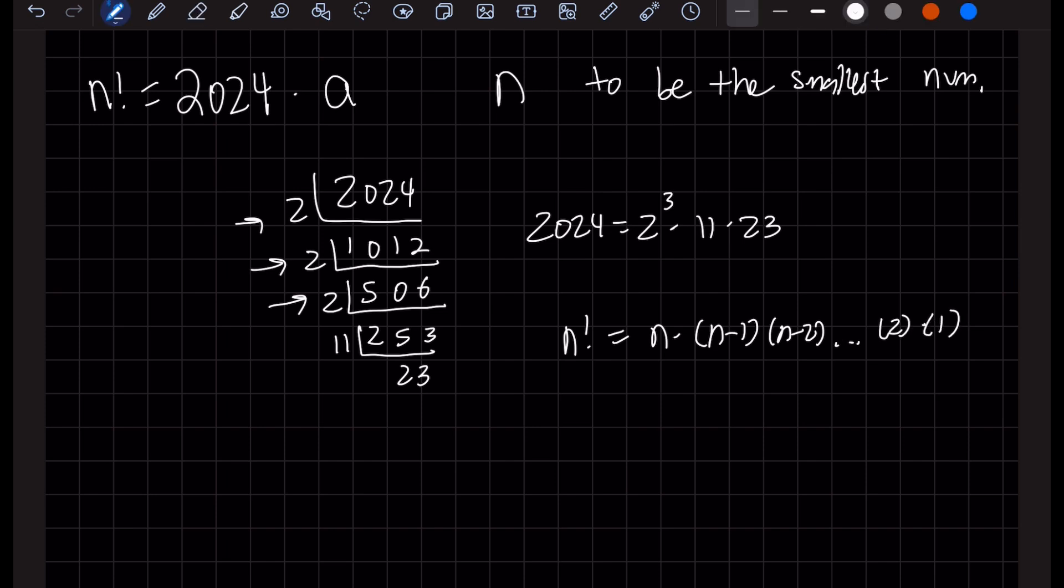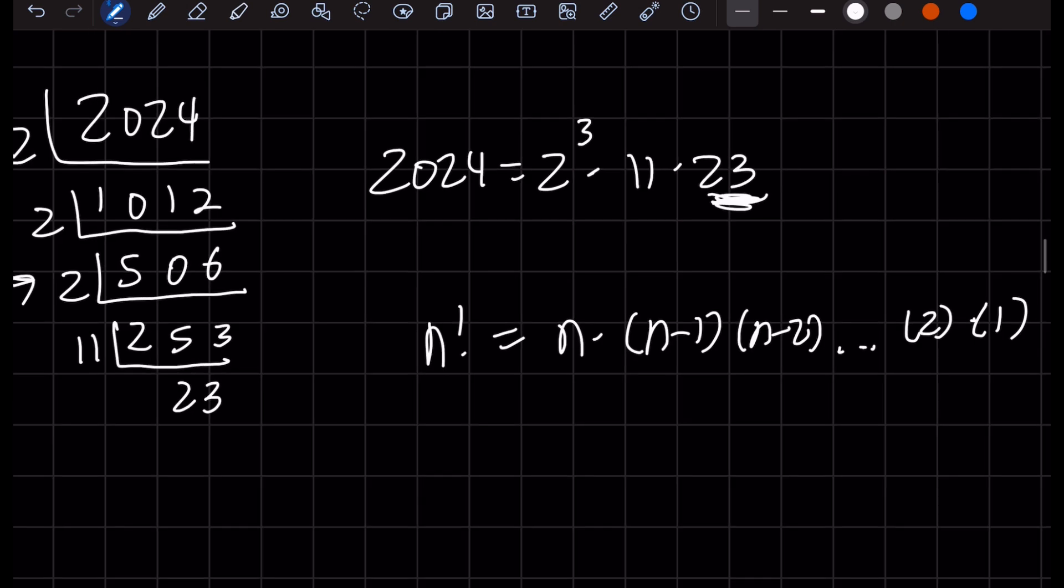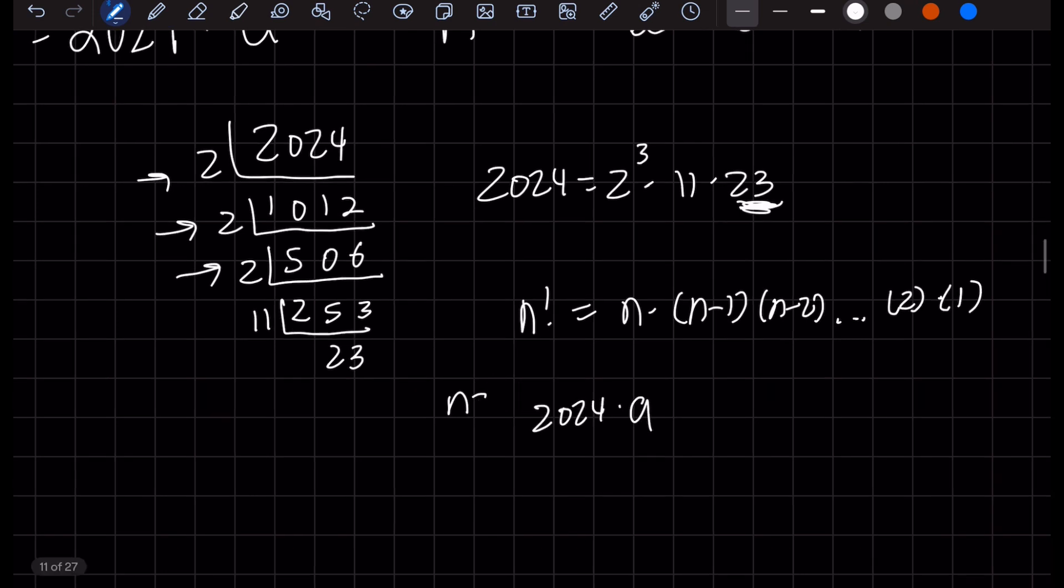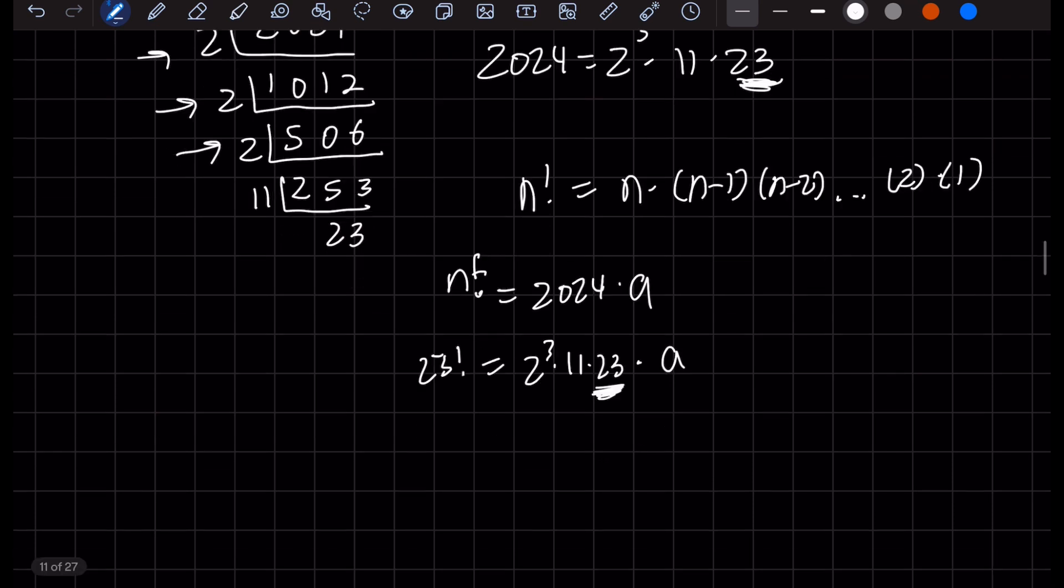So since these are all prime numbers, it has no multiples, right? So we see that n factorial has to be at least 23. n has to be equal to 23, because we know 2024, we want this, right? So if we do 23 factorial, this would include all the numbers here. You include this 23 here.